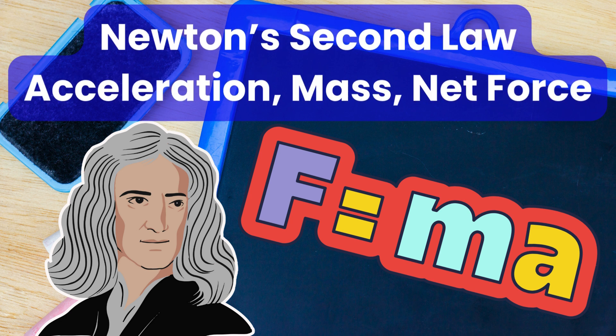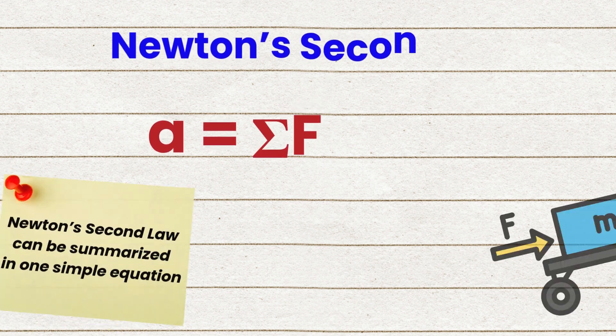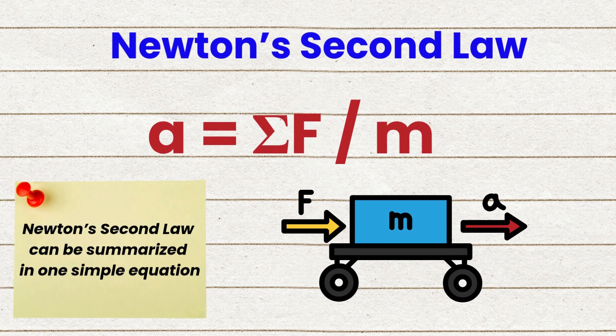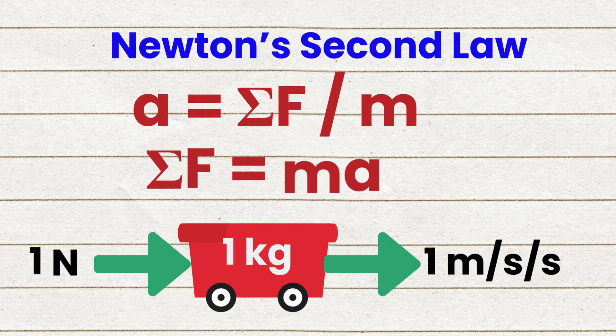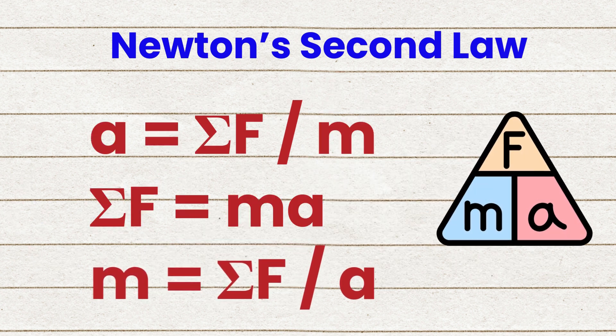Newton's second law — combining parts 1 and 2. A equals net force over mass, which can also be written as net force equals mass times acceleration. With this formula, we can calculate the net force, the mass, or the acceleration of an object, as long as we know two of the three variables.